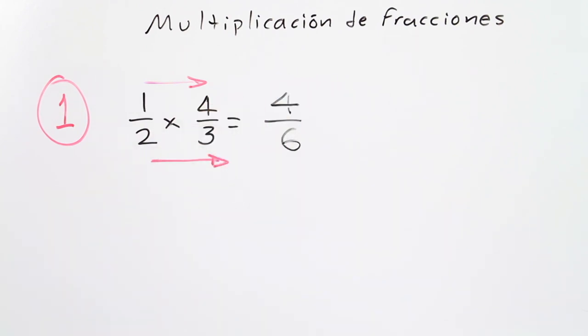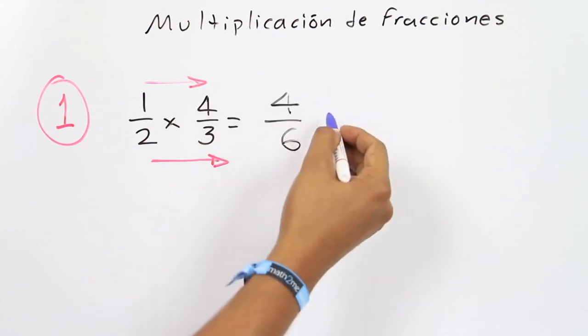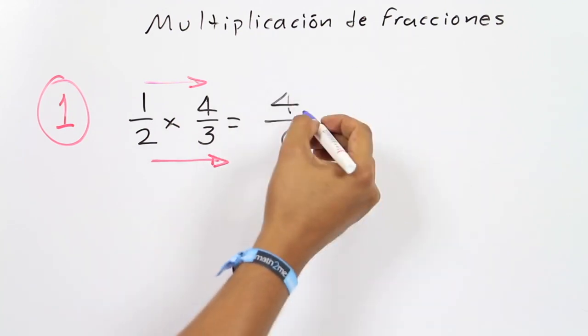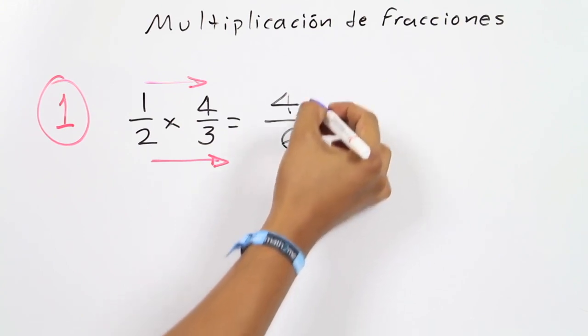However, it is recommended to simplify any fraction if possible, because usually this is how answers in tests or books are requested. As 4 and 6 are even numbers, both can be divided by 2.